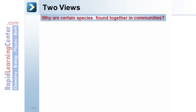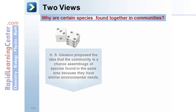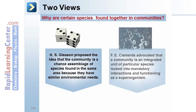There are two main views on why certain species are found together in communities. H.S. Gleason proposed the idea that the community is a chance assemblage of species found in the same area because they have similar environmental needs. F.E. Clements advocated that a community is an integrated unit of particular species locked into mandatory interactions and functioning as a superorganism.